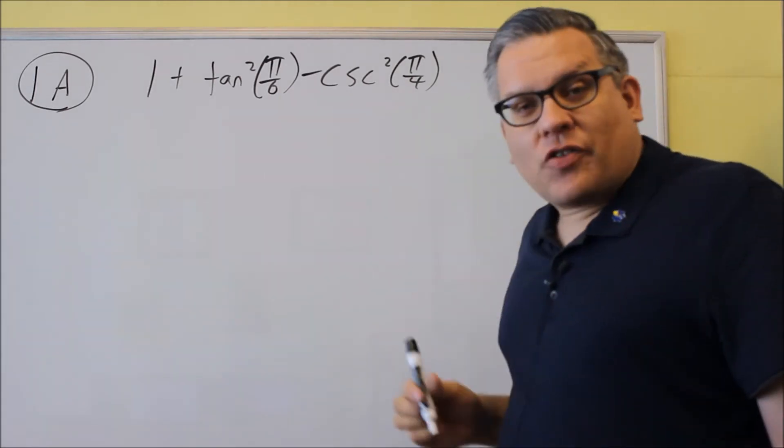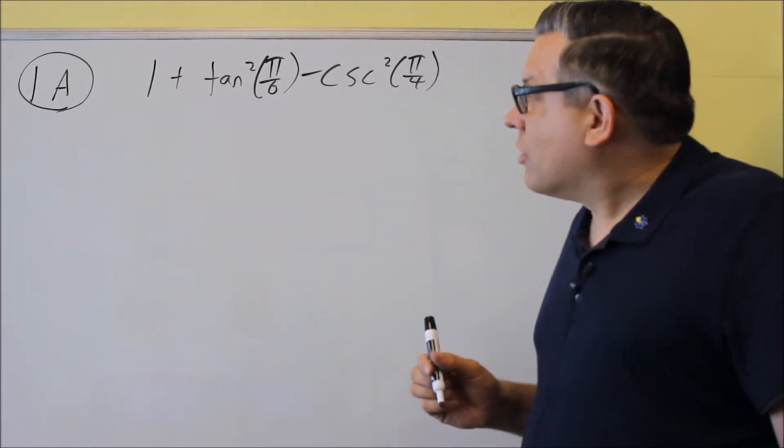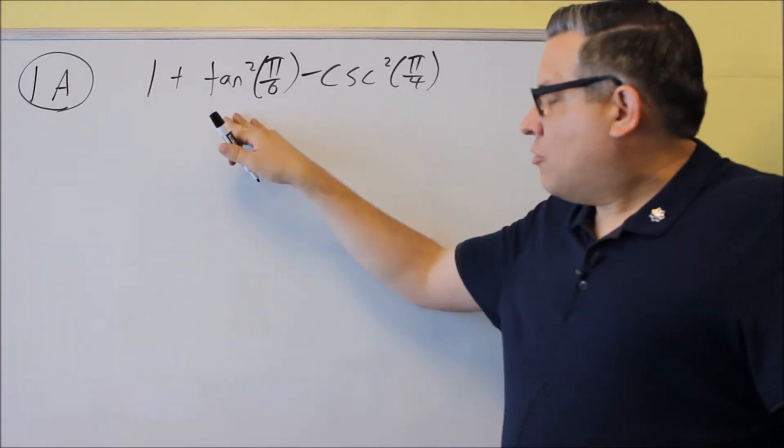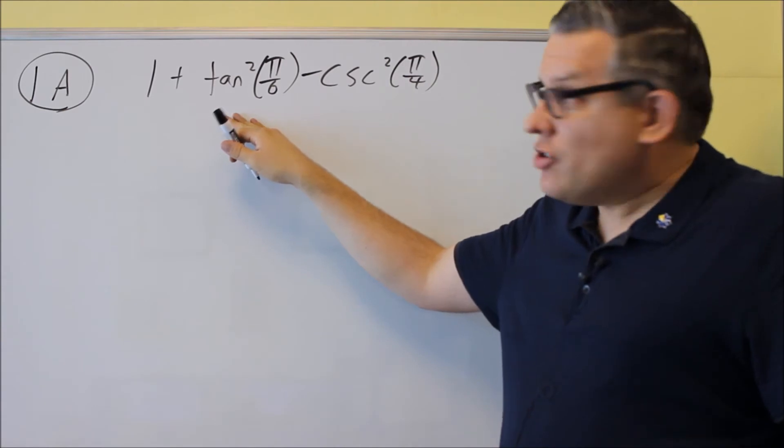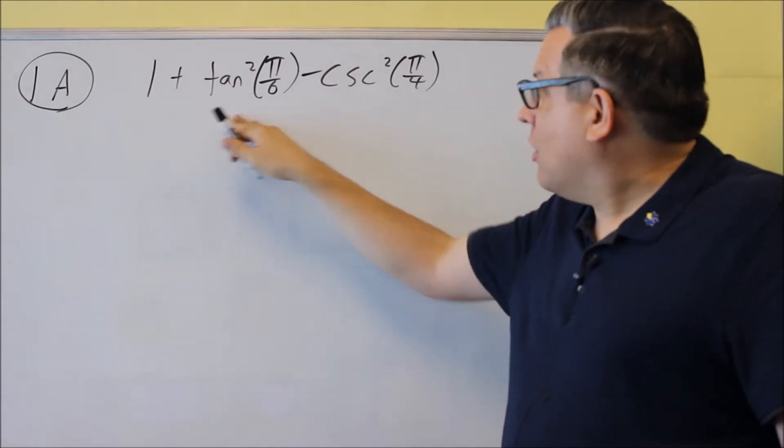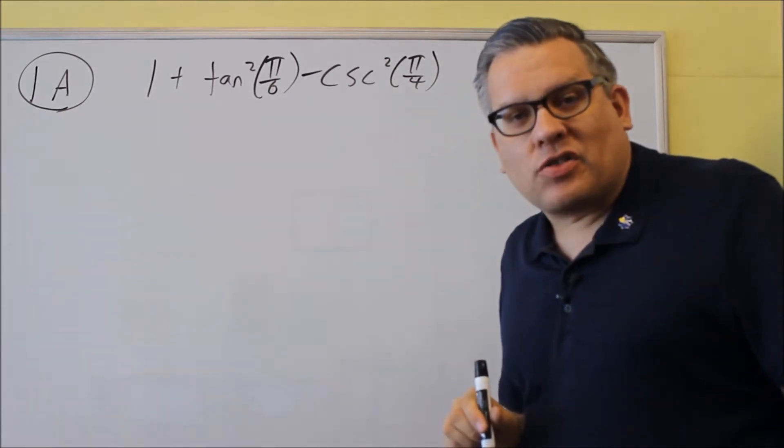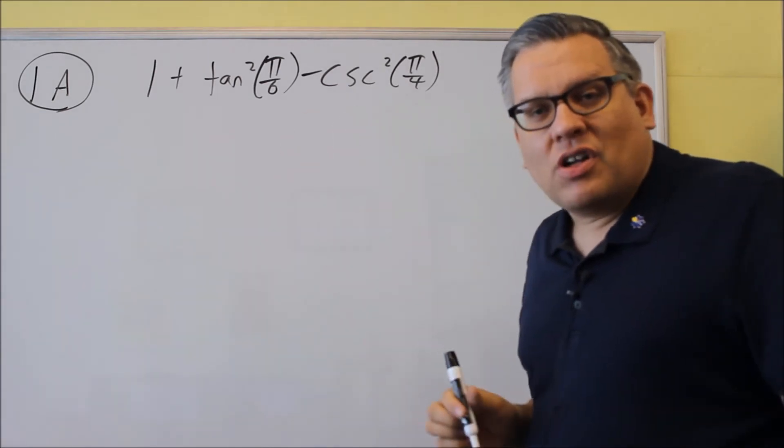Now, this problem itself, there's two different ways that you can do this problem. You can either just, if you memorize the value for tangent, you can just put that value directly in. But you can also do these by using identities, and this is how I'm going to show you how to do this problem.